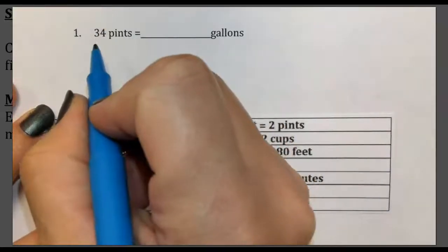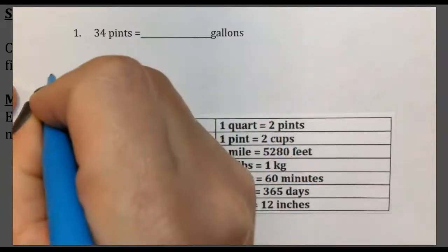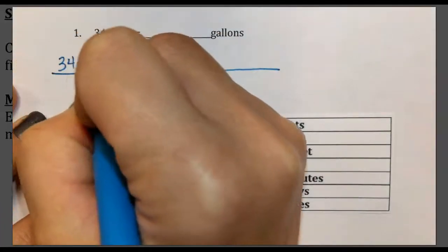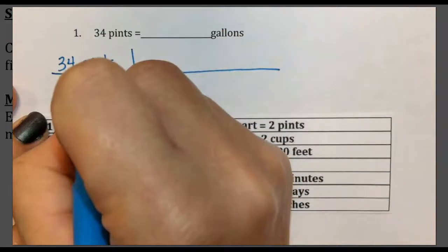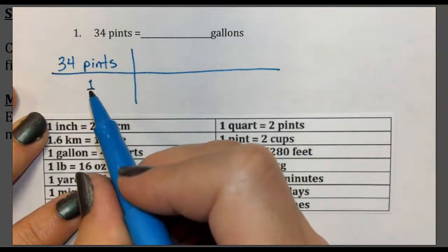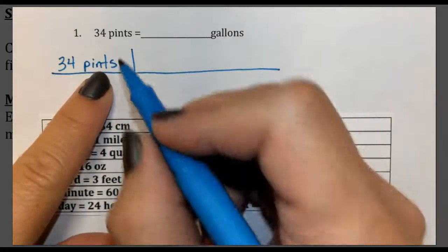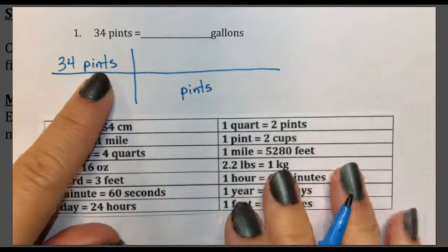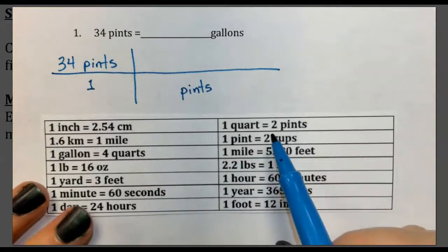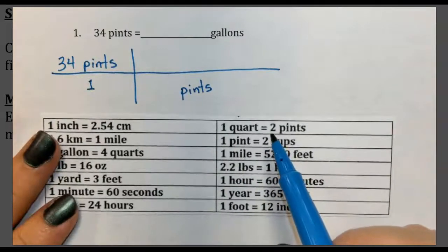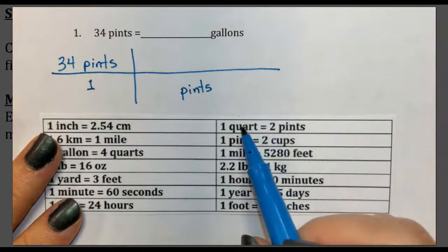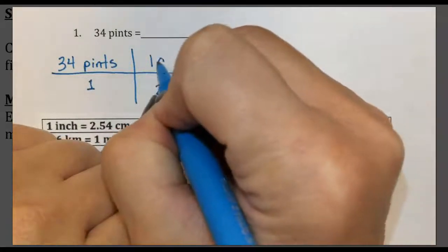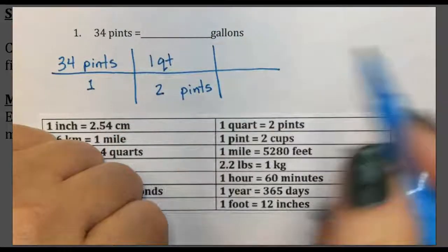Always start by taking your given value and placing it over one. I'm going to draw my crossbars and put my given value, 34 pints, over one as a placeholder. Now we want to set up our units to cancel. The pints are on top, so they need to come down to the bottom of the next step. I need a conversion factor that uses pints, and I'm trying to get to gallons. We have two pints equals one quart, so we write two pints on the bottom and one quart on top.